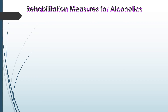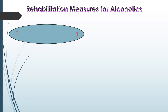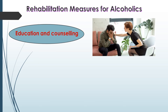Rehabilitation measures for alcoholics. Rehabilitation means the person should come out from their addiction and lead a normal life. The first measure is education and counseling. Counseling is given by a psychiatrist. Proper counseling helps the alcoholic to overcome their problems and stress, and to accept their failures in life. By accepting their failures, they can overcome the problem and lead a normal life.